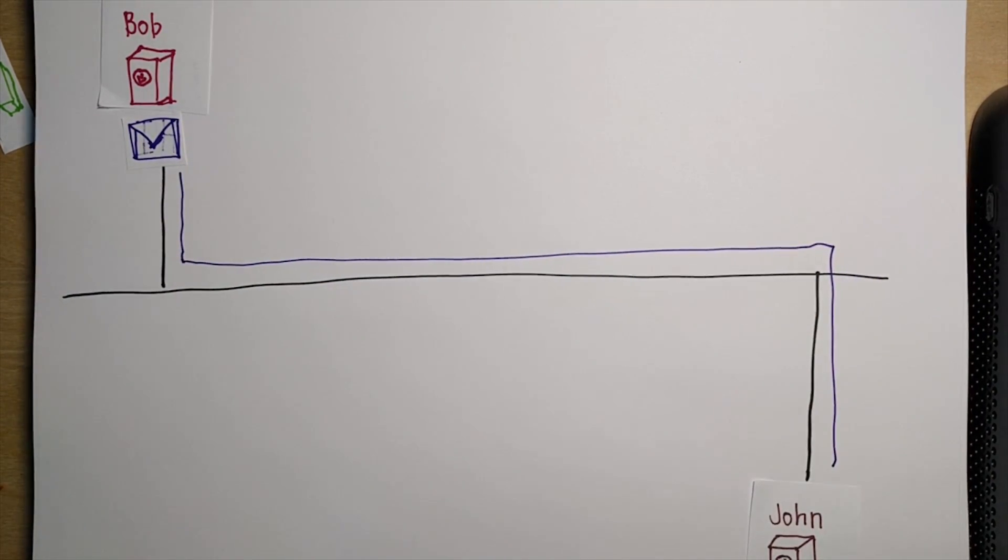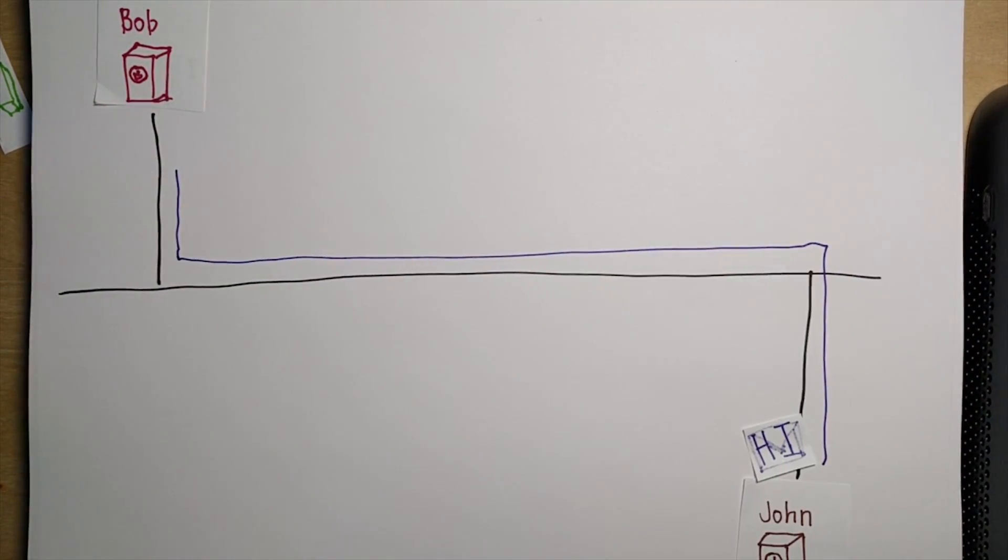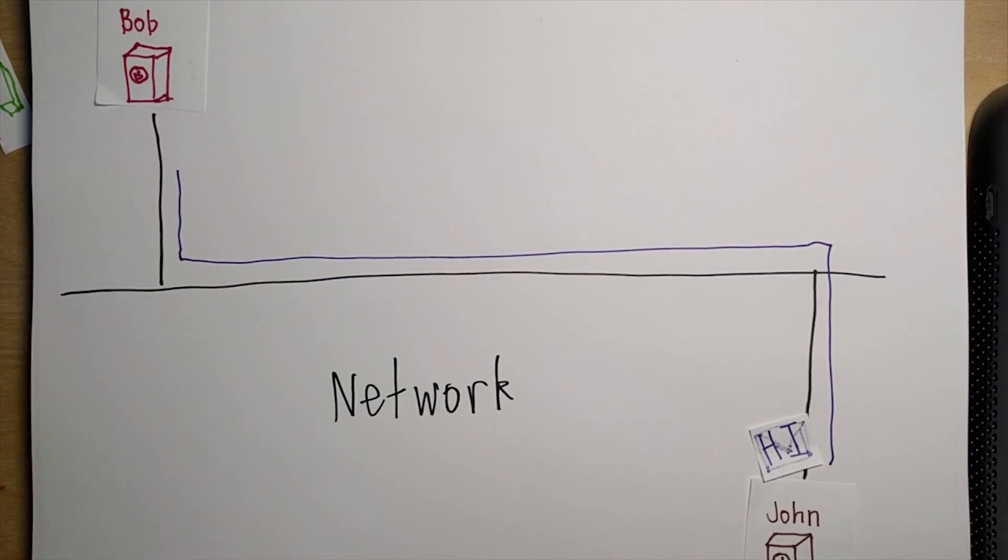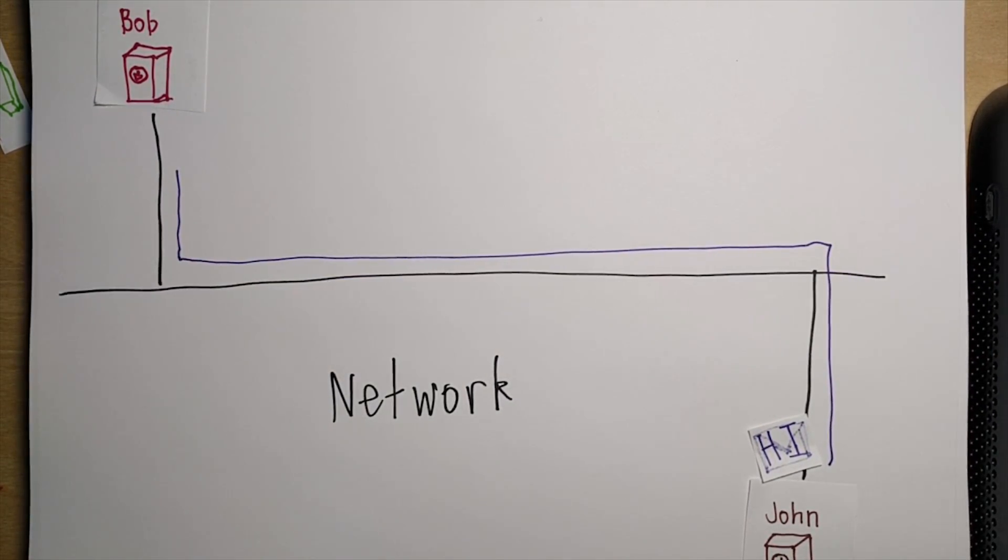Bob sends a file to John. The file travels through the wire, goes to John, and he sees that it says hi. This is called a network. When we have more than one network connected to each other, it's an internetwork, or internet. That is exactly how the internet works, but on a more complex level.